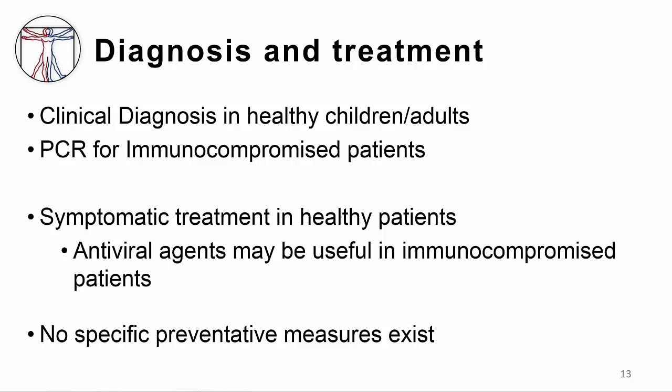Diagnosis of HHV6 is a clinical diagnosis in normal children. In immunocompromised patients, molecular diagnosis, specifically PCR, for HHV6 or HHV7 is the test of choice. For primary infection during childhood, we give symptomatic treatment of fever and supportive care for febrile seizures if they occur. Treatment of disease in immunocompromised patients includes antiviral agents such as foscarnet or ganciclovir. There are no specific preventative measures.